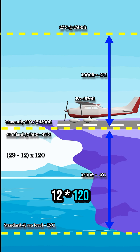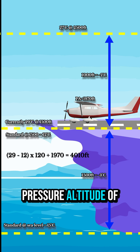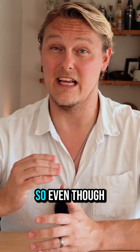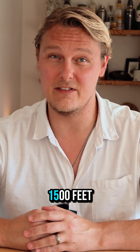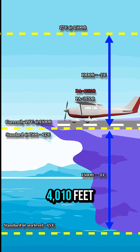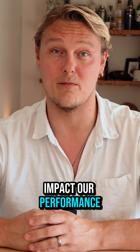Now let's fill in the formula: 29 minus 12, times 120, plus our previous pressure altitude of 1,970 feet, equals 4,010 feet. So even though we're only at 1,500 feet, the plane will perform as if it were at 4,010 feet, which will significantly impact our performance.